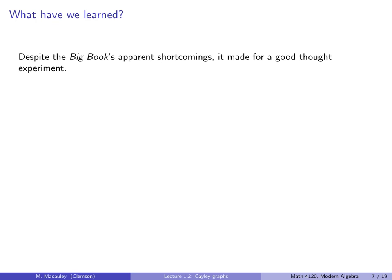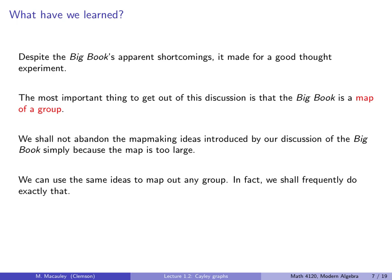Okay, so despite the big book's apparent shortcomings, it made for a good thought experiment. And that was the point of it. So the most important thing to get out of this discussion is that the big book is a map of a group. So we shall not abandon the map making ideas introduced by this discussion just because the map is too large. We can use the same ideas to map out any group. And in fact, we shall frequently do exactly that. A lot of groups that we see will have size 4, 5, 6, 10, 12, things that are small, and we can actually create a map and draw it on a sheet of paper.